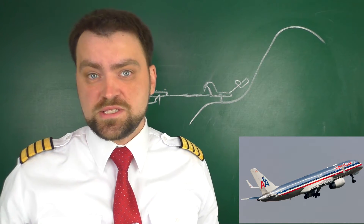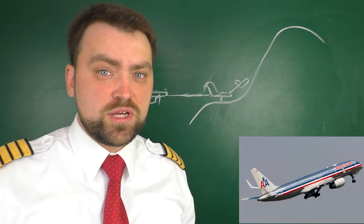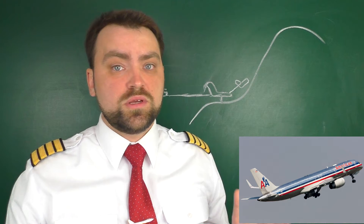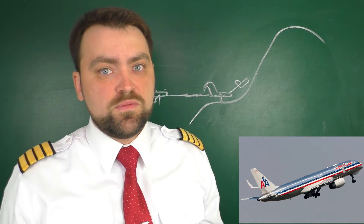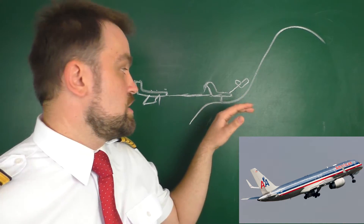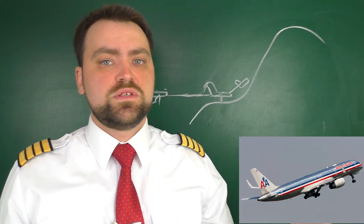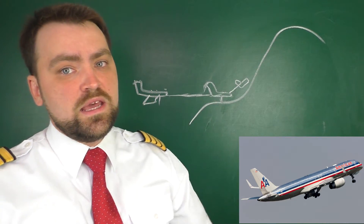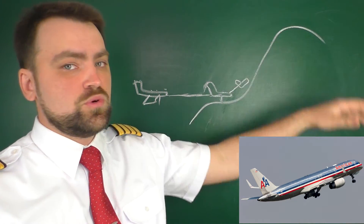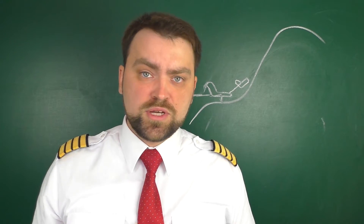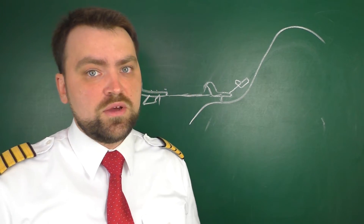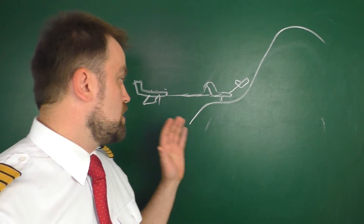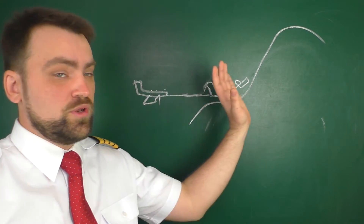A fatal CFIT accident happened to an American Airlines Boeing 757 back in 1995. That aircraft was equipped with the old GPWS working only with the radio altimeter. They received the warning just 13 seconds prior to impact, and there wasn't enough vertical speed to overtake the mountain. Today, with the new generation of enhanced ground proximity warning systems, it is almost impossible to get into that situation, as alerts come much earlier before impact.